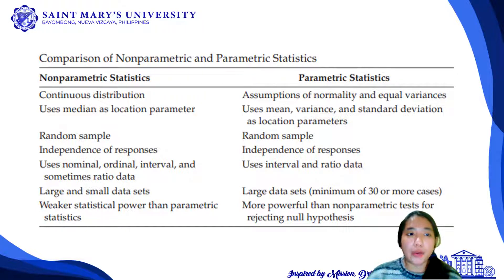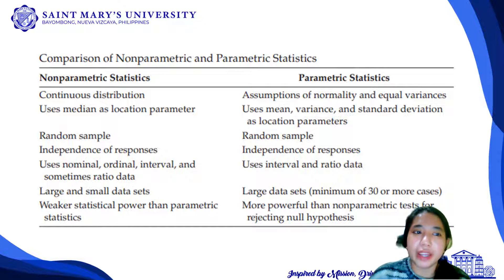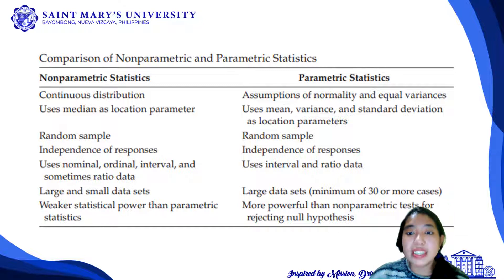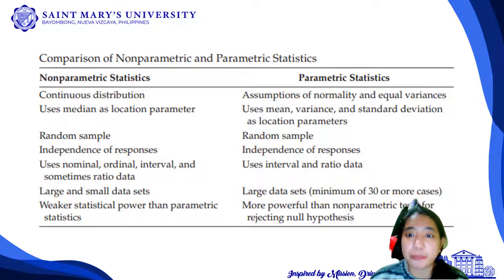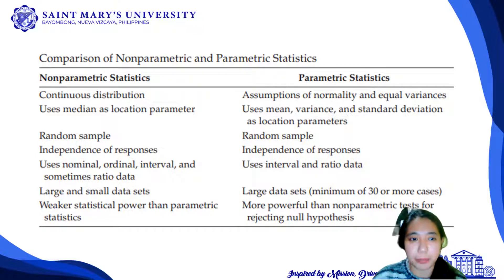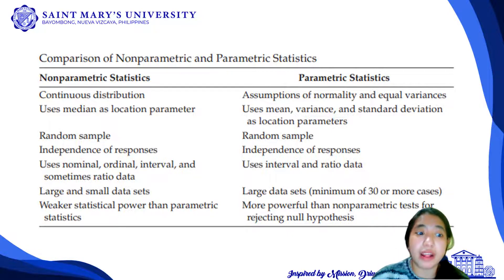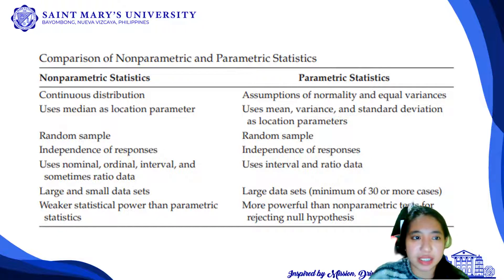For non-parametric, we can use both large and small data sets, but for parametric, it requires large data sets — a minimum of 30 or more cases. It has also been considered that parametric tests are more powerful than non-parametric tests for rejecting the null hypothesis, and consequently, non-parametric tests have weaker statistical power than parametric statistics.